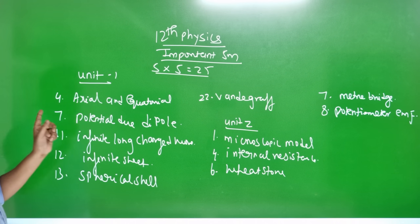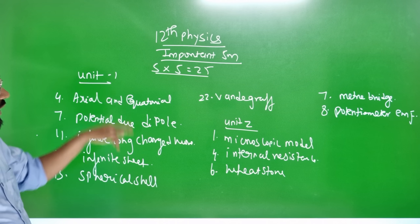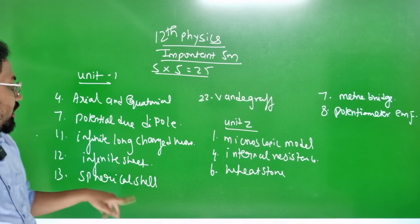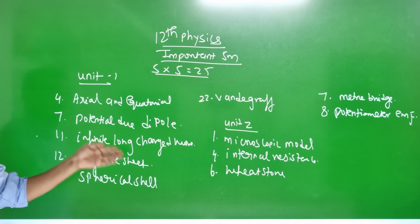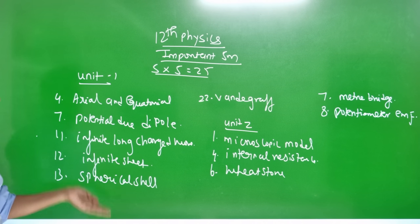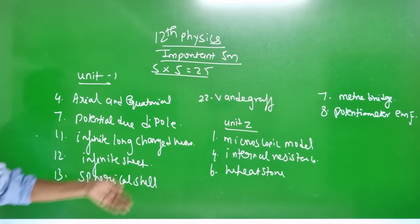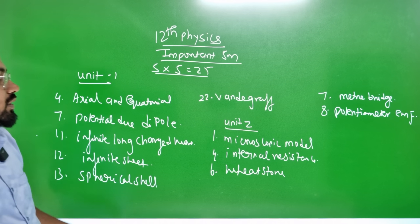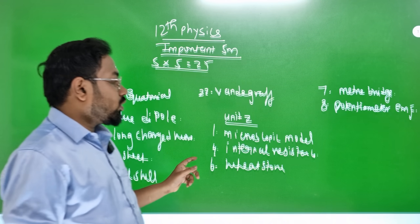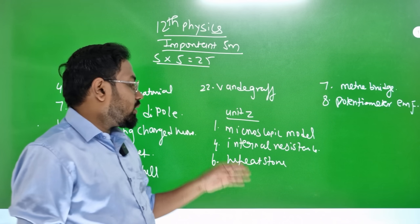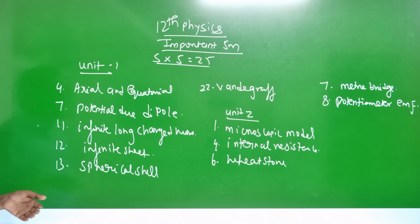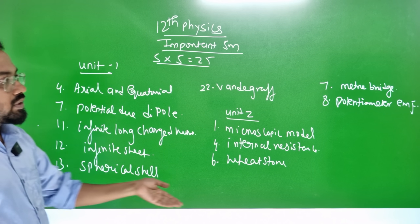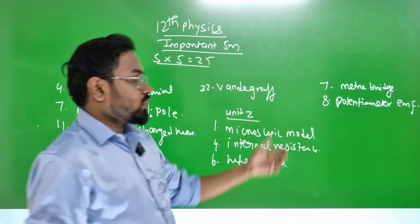The 7th question book back number is 5-mark long answer. Topics include: charges, gas, sheets, spherical shell, 3rd gear regulator, Unit 2 microscopic model — 1st question, 4th question — internal resistance, Wheatstone bridge, meter bridge, and potentiometer.